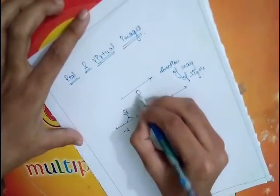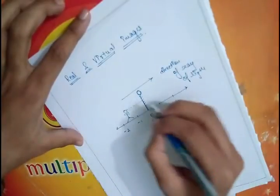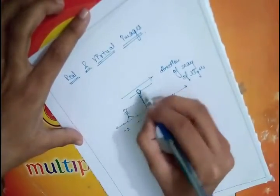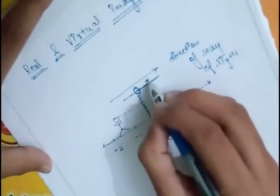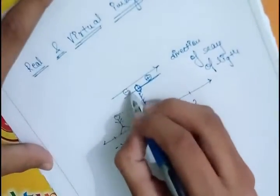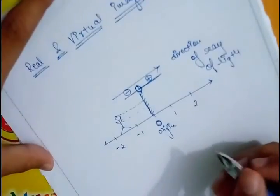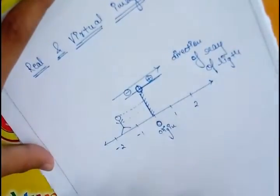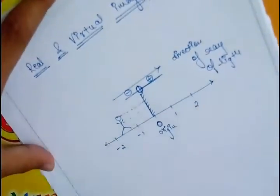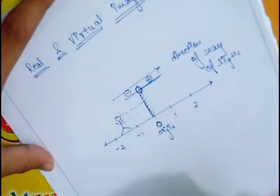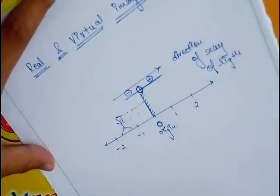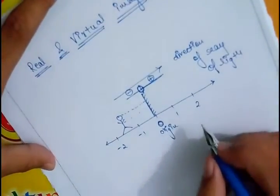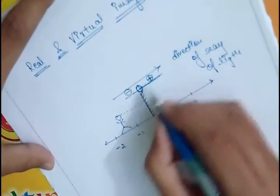And this is origin. So if this is origin, we have to take this part as positive part and this part is negative part. So we can use the sign convention. We can easily understand the sign convention, what sign convention we should use in the numericals.